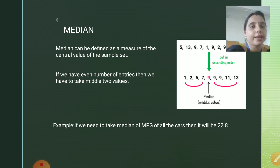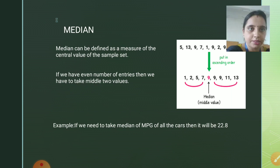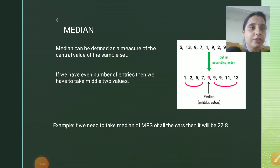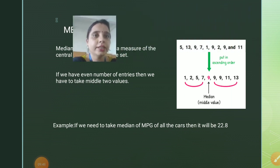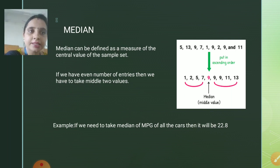Let's move ahead to our next topic, that is median. Median can be defined as a measure of the central value of the sample set. Central value means you can consider the following list. When you consider the list, you will find nine elements: 5, 13, 9, 7, 1, 9, 2, 9, and 11.